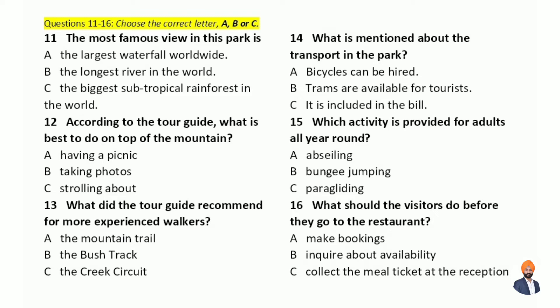Bungee jumping and paragliding are also available except for during the summer. You might worry about meals here. Even though there is only one restaurant in the park at the moment, the variety of dishes is astonishing. There are two meals included in the price. Just get your meal ticket at the reception before dining. There is no need to make reservations or worry about availability since there are plenty of tables.